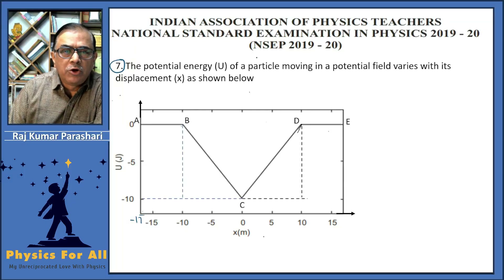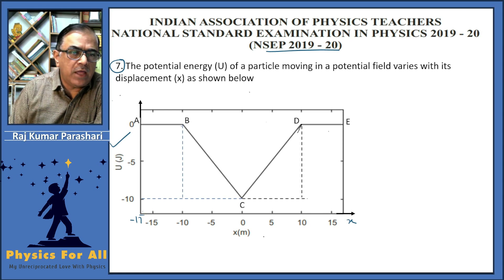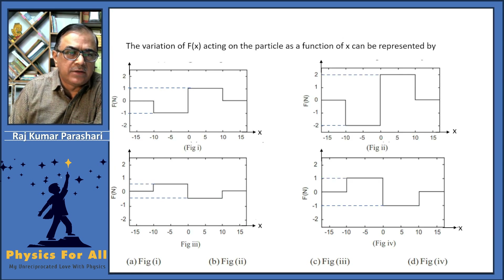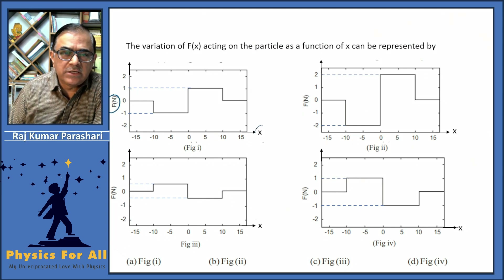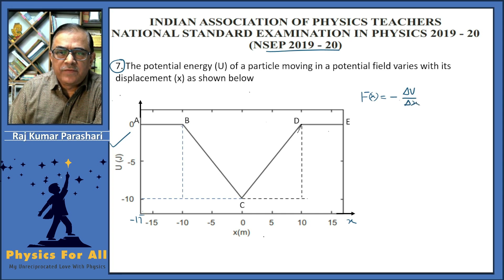Now question number seven of NACP 2019-20. In this problem, a potential energy versus displacement graph is given and we are supposed to find a corresponding graph between force and displacement. We know that the conservative force is given by the expression negative times ΔU/ΔX, which is also negative times the slope of the U versus X graph.